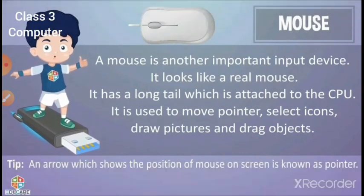The arrow which shows the position of the mouse on the screen is known as a pointer. Here you can see a mouse pointer on the monitor.